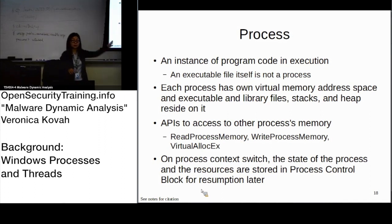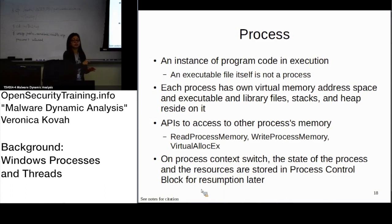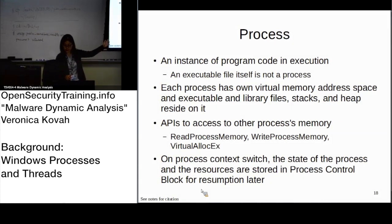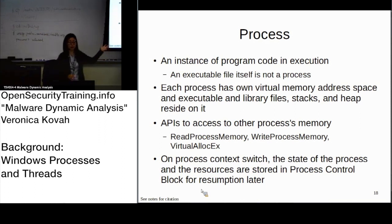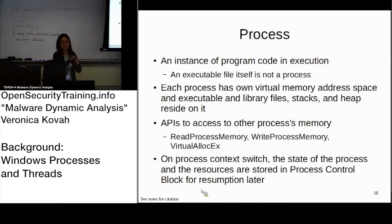One important thing to keep in mind is that once the program runs, it has its own memory space. That means by default, one process cannot access another process's memory. But there are APIs you can use to do it — examples are ReadProcessMemory, WriteProcessMemory, and VirtualAllocEx. During some of the lab files, we want to actually see how one process injects some code into another process.